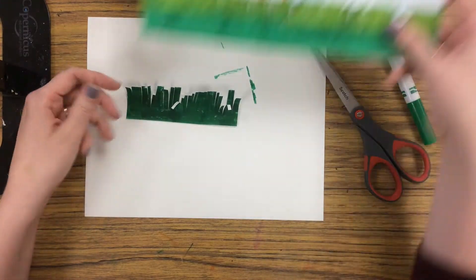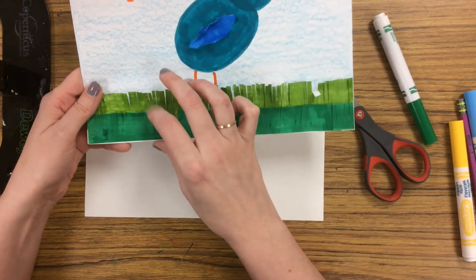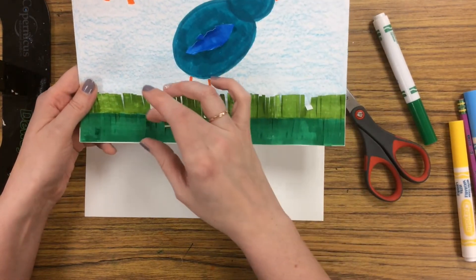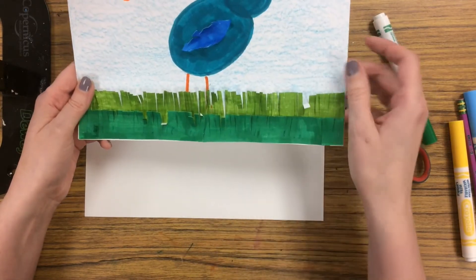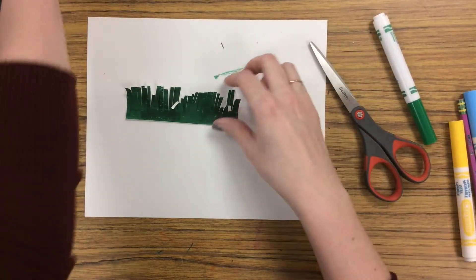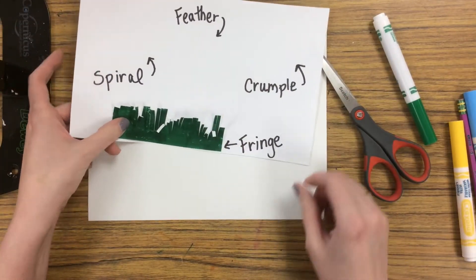You can even do two different layers. I did some shorter grass with the dark green on here and some lighter green grass that's taller to give it a little bit more dimension. So that's our first technique, is fringe.